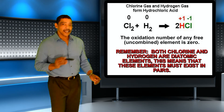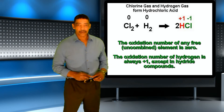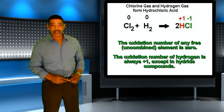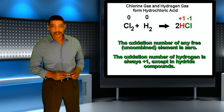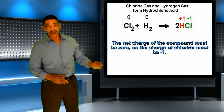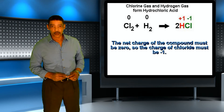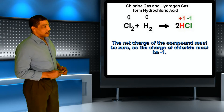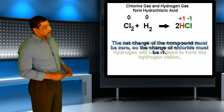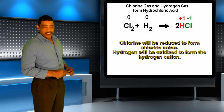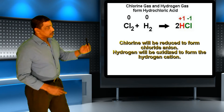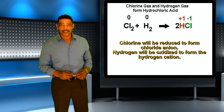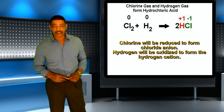However, in the compound hydrogen chloride, hydrogen will now possess a plus one charge as indicated on the periodic table, and chloride will possess a minus one charge. During this reaction, chlorine will undergo reduction to form chloride ion, which has a negative charge, and hydrogen will undergo oxidation to form the hydrogen cation, which has a plus one charge.